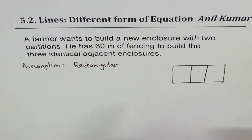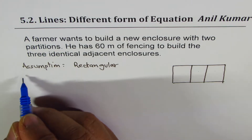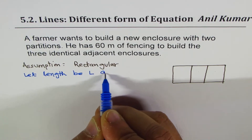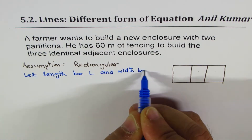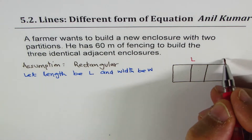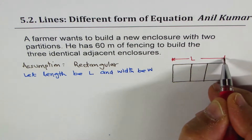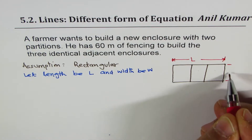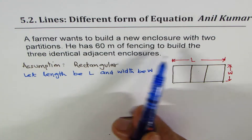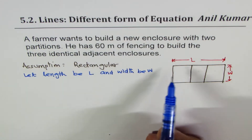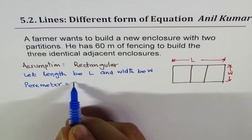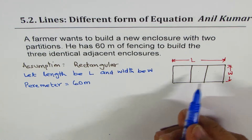Let's define some variables: we select length L and width W. We are assuming the enclosure is rectangular. The total fencing means the perimeter is 60 meters — that is the sum of all the sides.